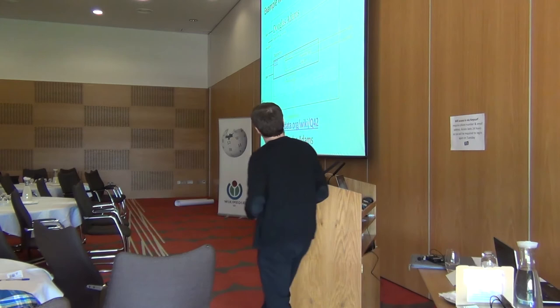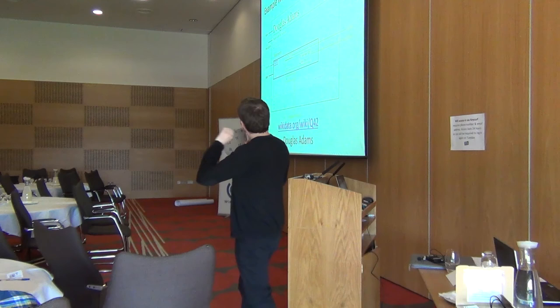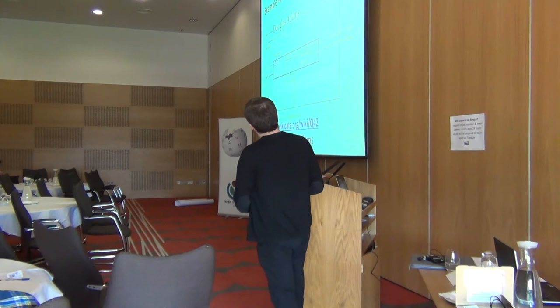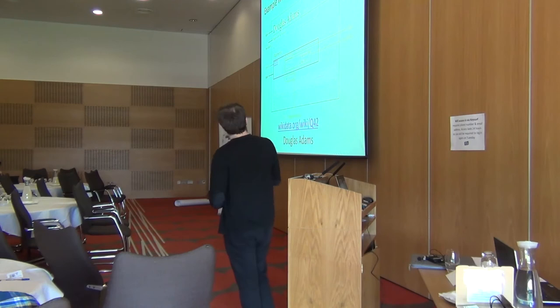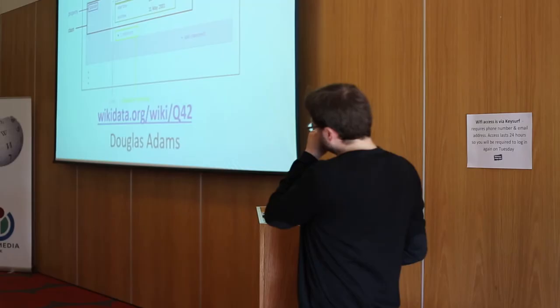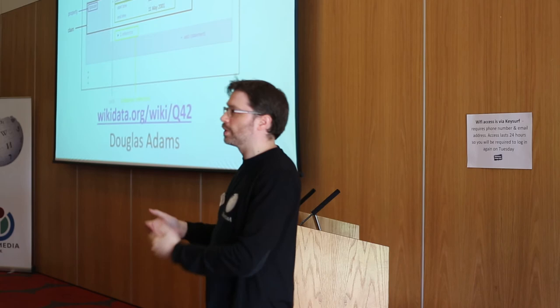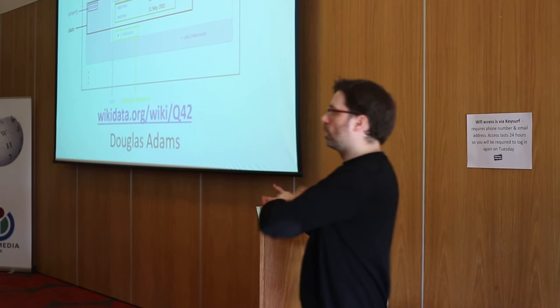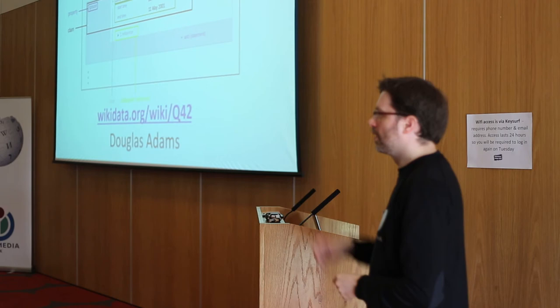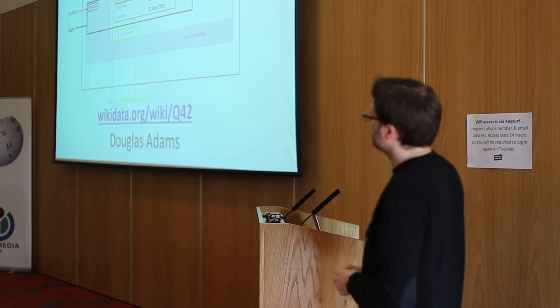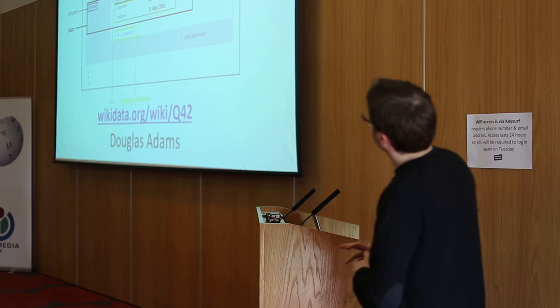For example, the property 'spouse' has the value 'Jane Belson'. We can also add qualifiers to those properties, giving extra information like dates. We can also add references — where did we get this information from? What's the source? So if we had three different dates of birth for someone, we could add three different sources under that same property statement. That's the basic structure of a Wikidata item.